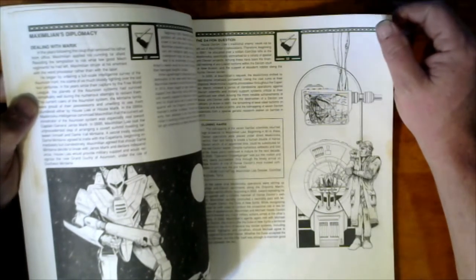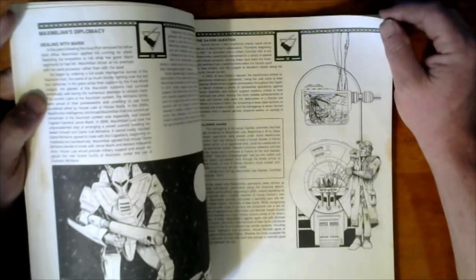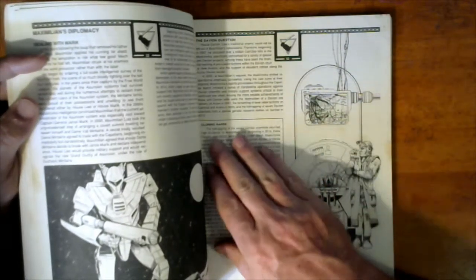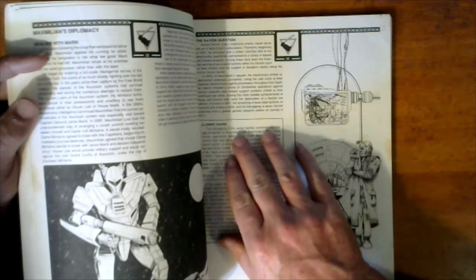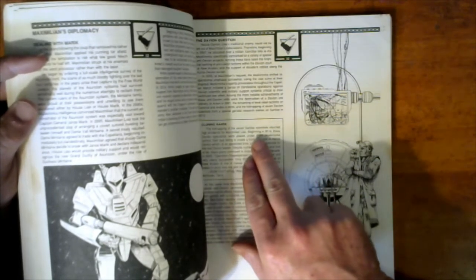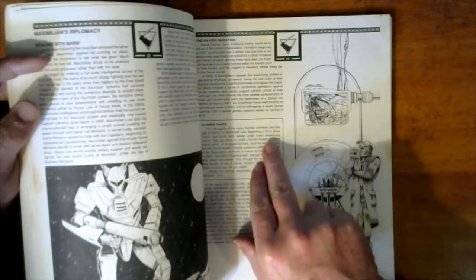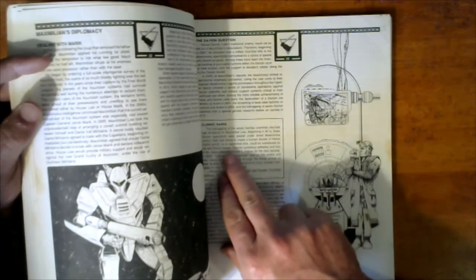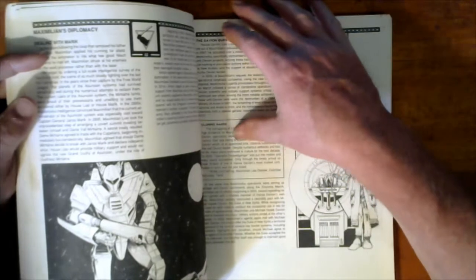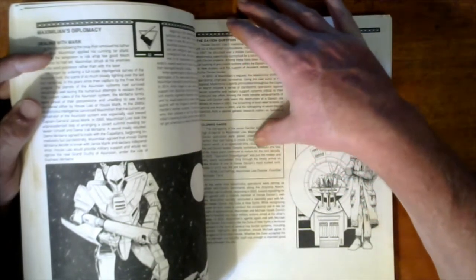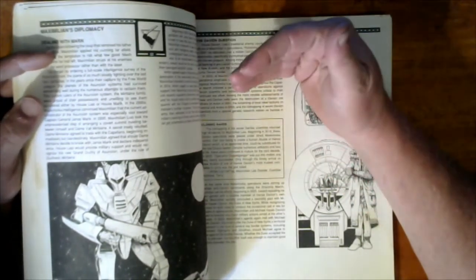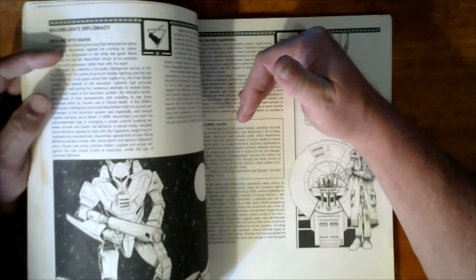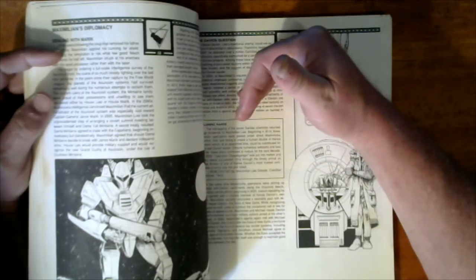Dealing with Amaris, Maximilian's diplomacy, the Davion question. Cloning Hans - this was the book for Sword and the Dagger. The kidnapping of seven select scientists to return high dividends for Maximilian. Beginning in 3016, these Davion specialists were placed on direct Maskirovka control. Their task: to create a human double of Hans Davion which at an appointed time could be substituted for the real leader. Despite numerous setbacks and loss of life, these plans continued to mature for the next decade.